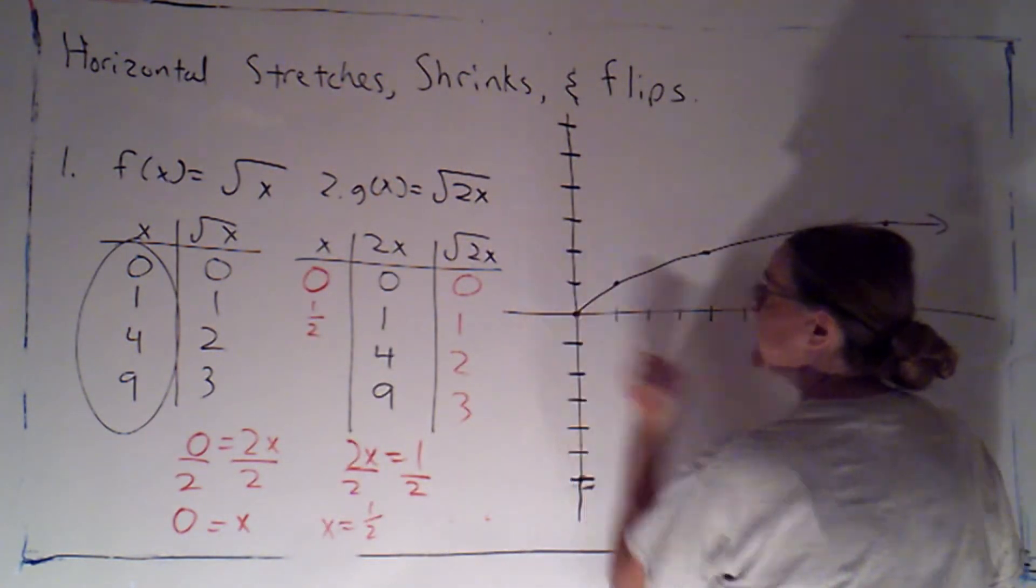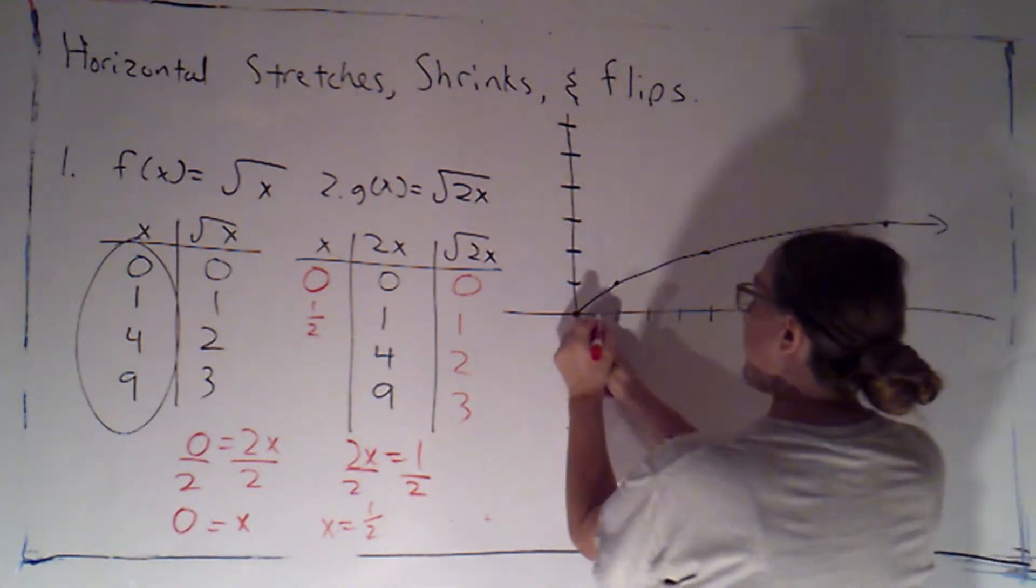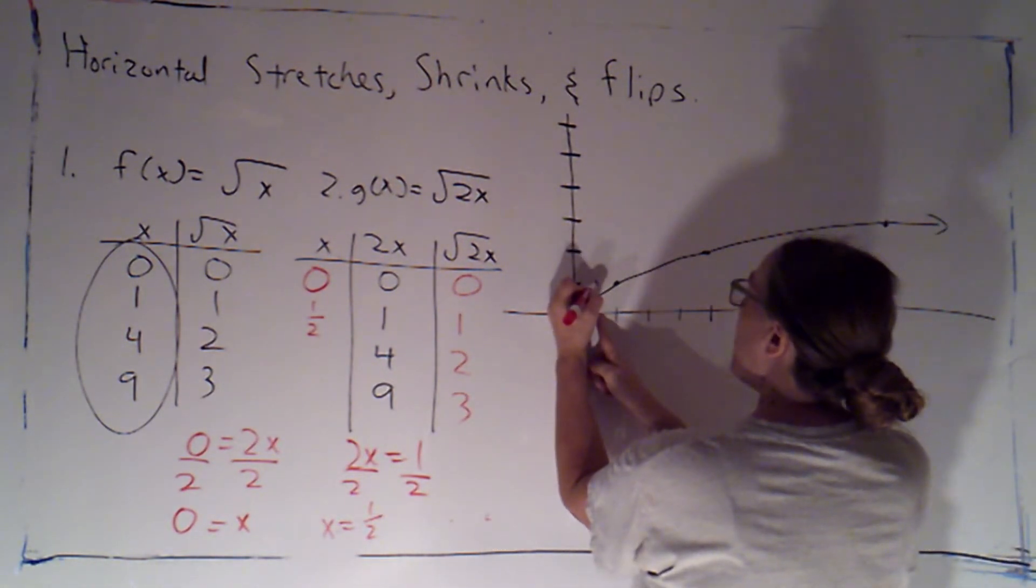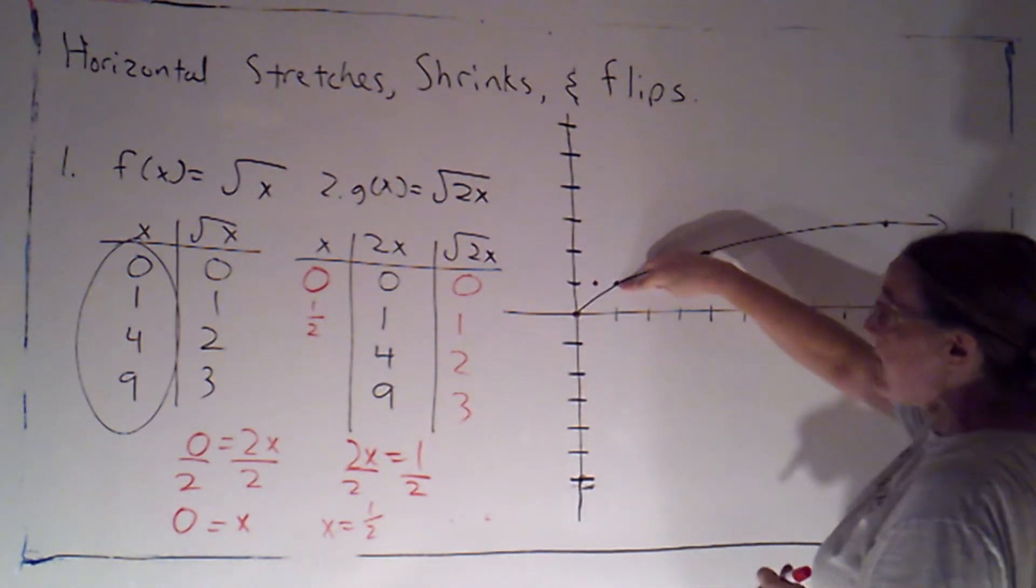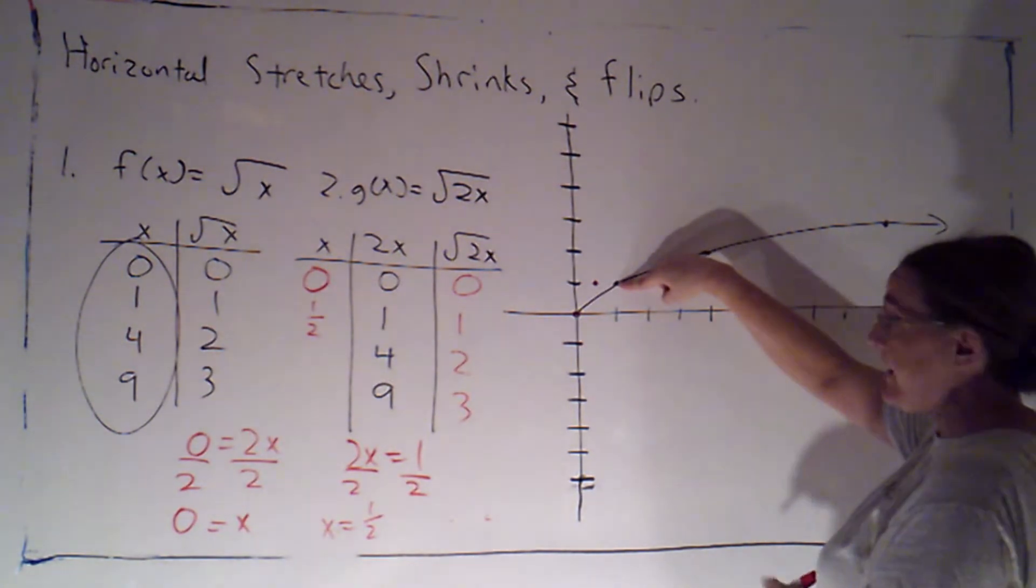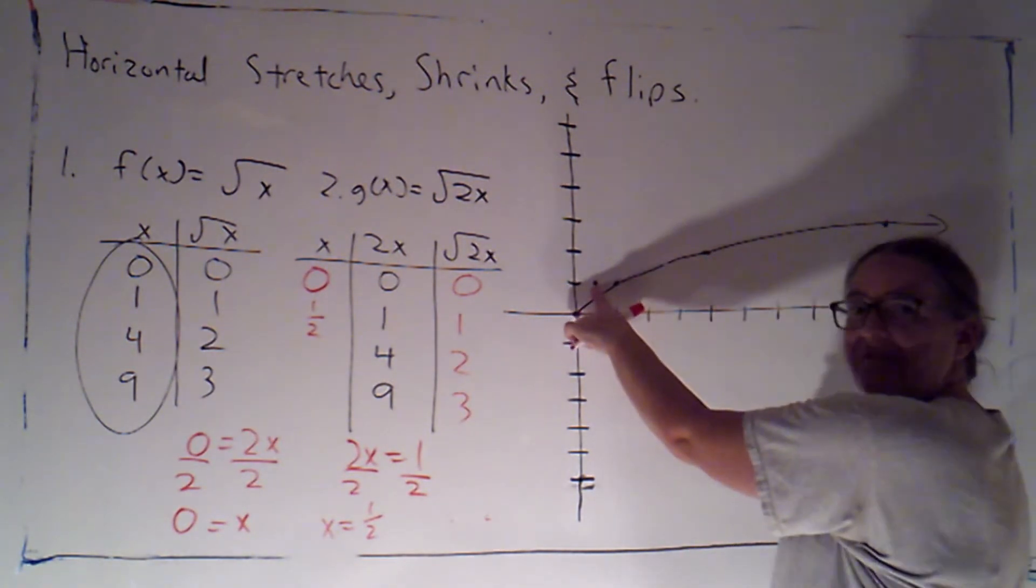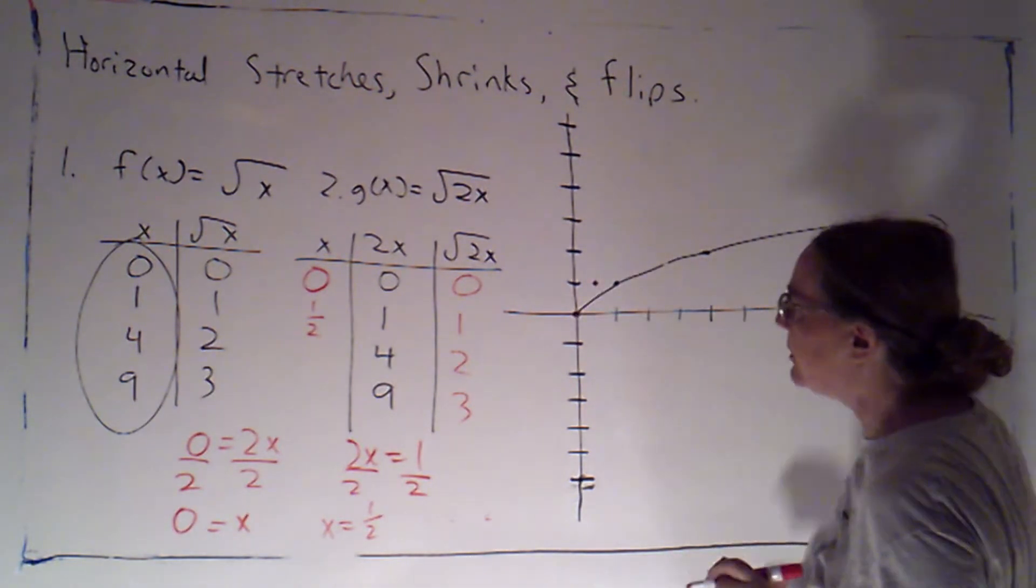So the point (0, 0) is still on my graph, but now I have a point (1/2, 1). So it's at the same height, has the same y value as this point, but the x value is half as big.